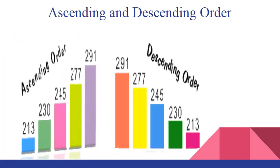Let us see more examples. From the left hand side, we can see that the numbers are arranged in their increasing order. That is 213, 230, 245, 277 and 291. This means that the numbers are arranged in ascending order.